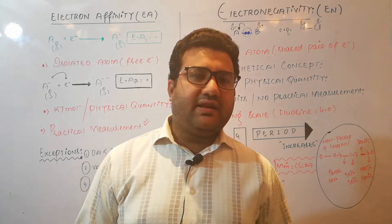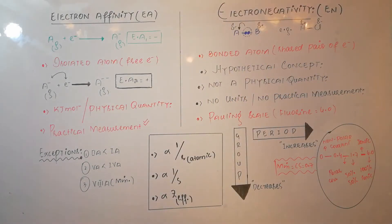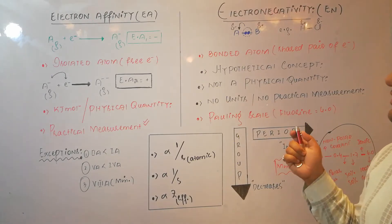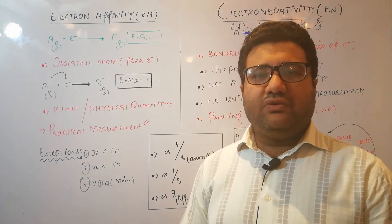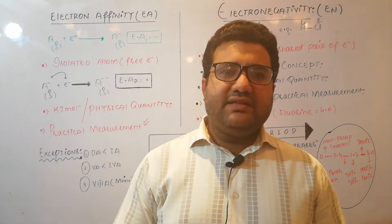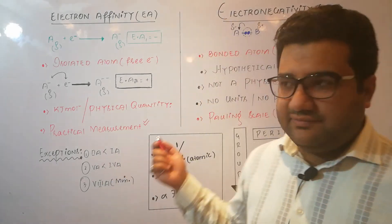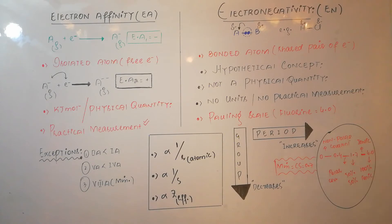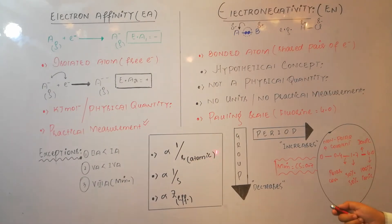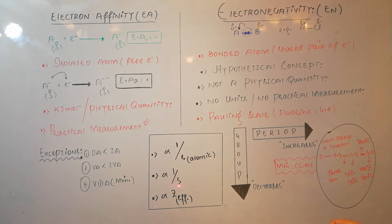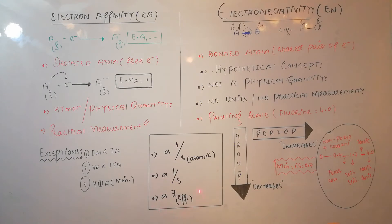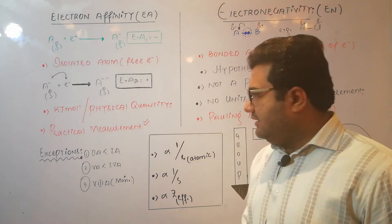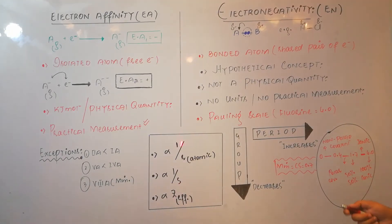The factors affecting electron affinity and electronegativity are the same as those affecting ionization energy. Both electron affinity and electronegativity are inversely related to atomic radius and inversely related to the shielding effect. Both are directly proportional to the effective nuclear charge (Z-effective). Since the dependence of both terms is on the same factors, their variation across the periodic table is also the same.